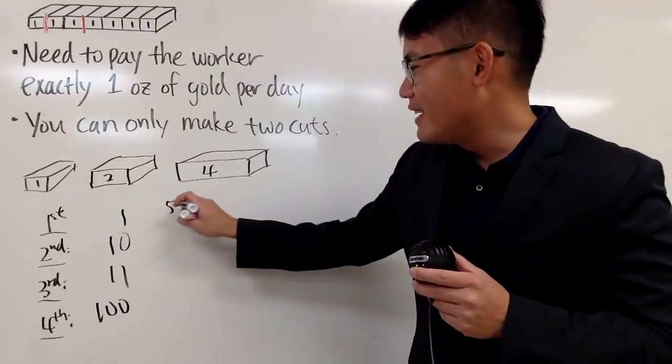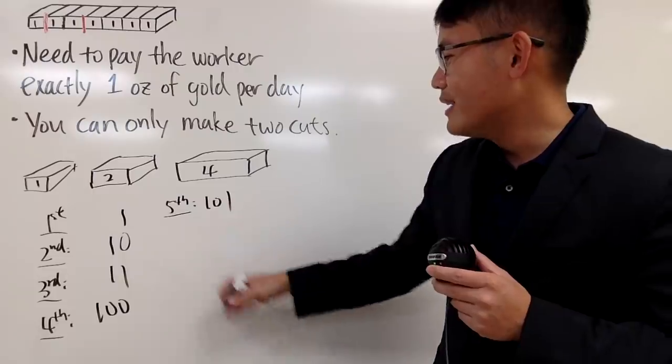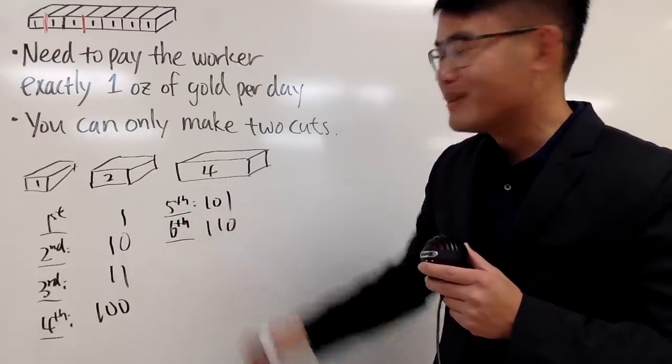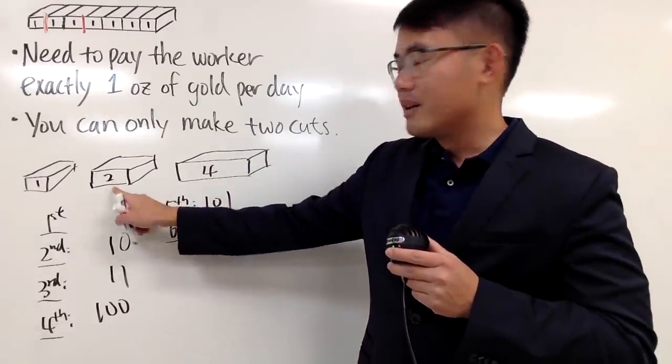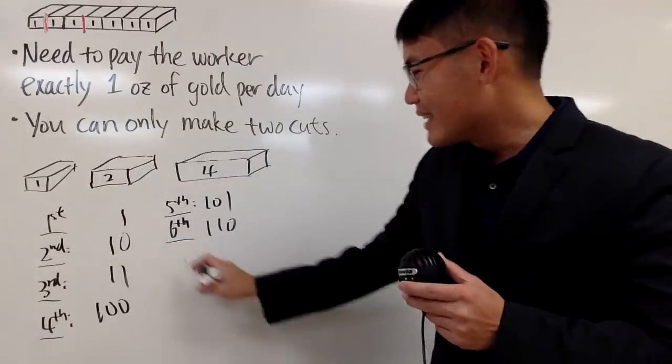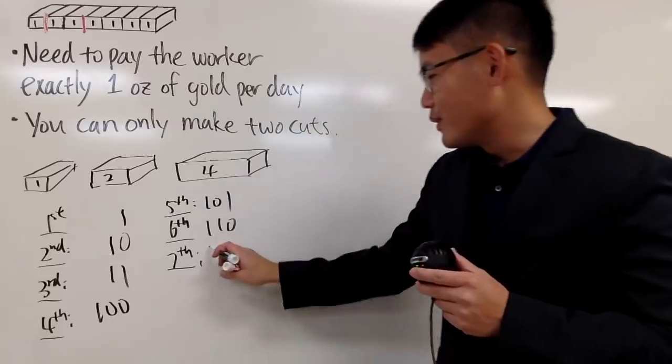And then on the fifth day, you are just going to add 1, so it's like 1, 0, 1. And then on the sixth day, once again, you add 1, and it becomes 1, 1, 0. So, this means you are going to give the worker this bar, but you have to ask for this back. And then on the seventh day, finally, he will have everything, 1, 1, 1.